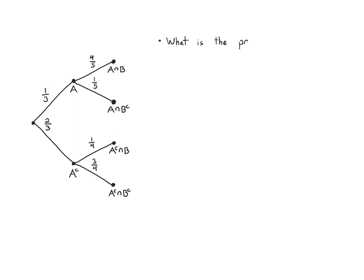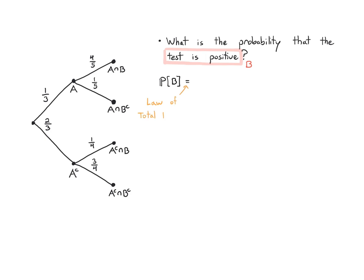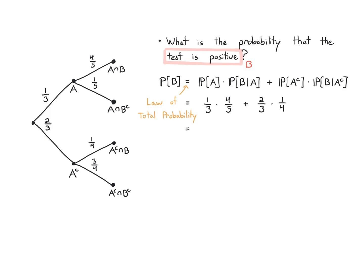What is the probability that the test is positive with no other condition — the event B? I can get the probability of B by the law of total probability: probability of A times probability of B given A, plus probability of A complement times the probability of B given A complement. That's one-third times four-fifths, plus two-thirds times one-fourth. Completing this calculation gives sixteen plus ten over sixty, which simplifies to thirteen over thirty.